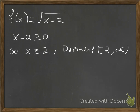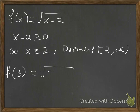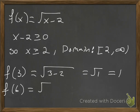As long as we pick any numbers in that domain, this function is defined. If we plug in 3: 3 minus 2 is 1 under the square root, and the square root of 1 is 1. If we try 6: 6 minus 2 is 4, and the square root of 4 is 2.